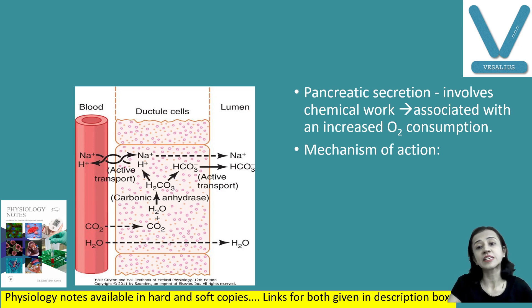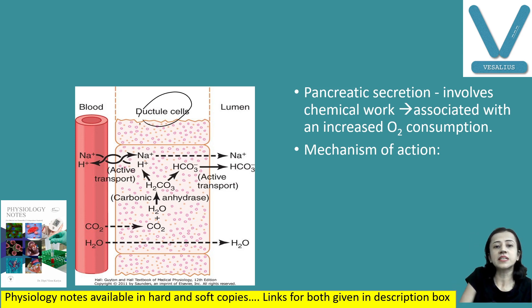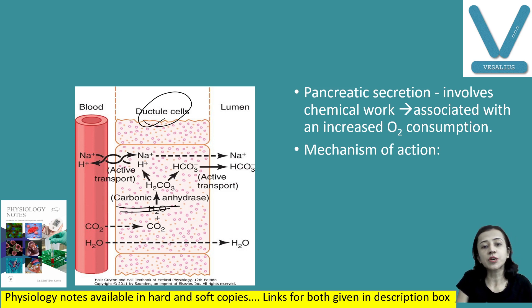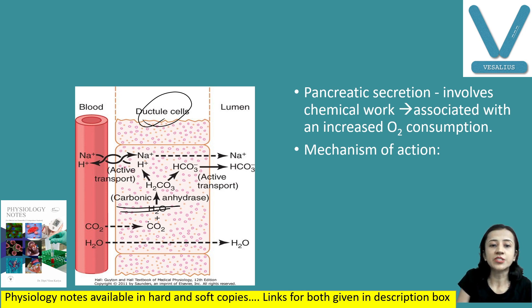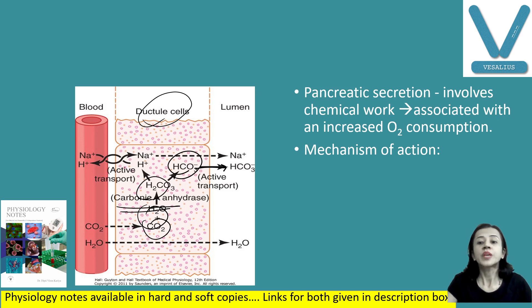Pancreatic secretion is a chemical process requiring oxygen and is associated with oxygen consumption. Ductal cells contain the enzyme carbonic anhydrase. H₂O combines with CO₂ to form H₂CO₃, which dissociates into H⁺ and HCO₃⁻ ions. The HCO₃⁻ ions are then secreted into the duct lumen. This is the mechanism of bicarbonate secretion.